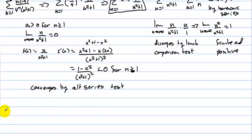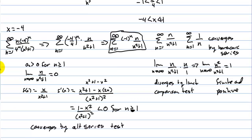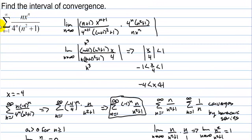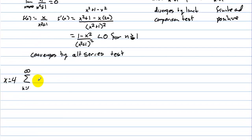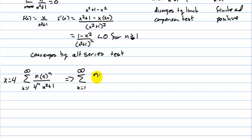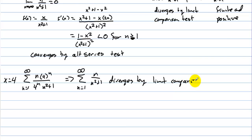Now what about x equals positive 4? Since negative 4 created negative 1 to the n, positive 4 creates positive 1 to the n. We have n times 4 to the n over 4 to the n times n squared plus 1. The 4 to the n cancels, leaving n over n squared plus 1, and we already showed that this diverges by the limit comparison test.